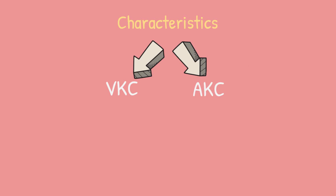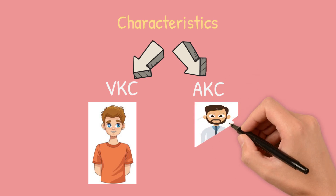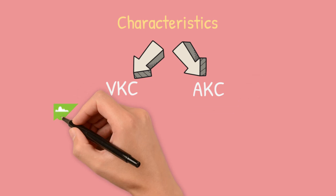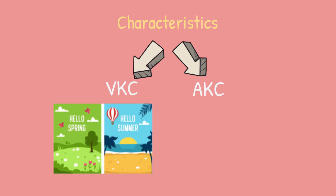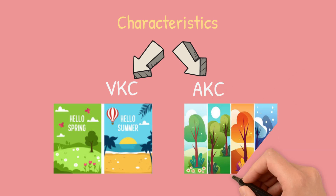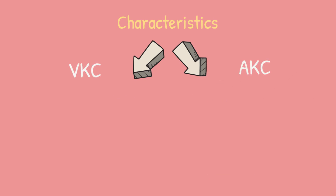The distinctions between vernal keratoconjunctivitis and atopic keratoconjunctivitis are as follows. Vernal keratoconjunctivitis affects children and young adults, while atopic keratoconjunctivitis occurs in middle age. Vernal keratoconjunctivitis is often seasonal and recurring, more prevalent in spring and summer, whereas atopic keratoconjunctivitis occurs year-round.